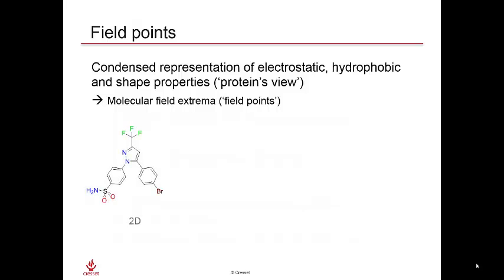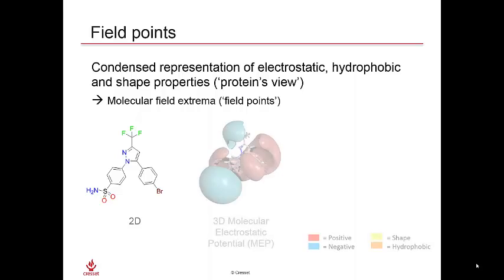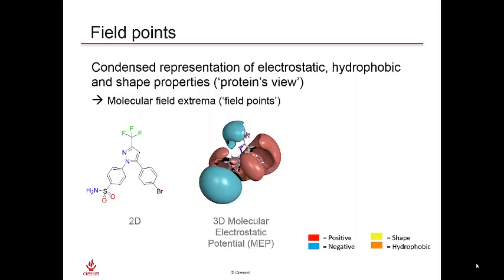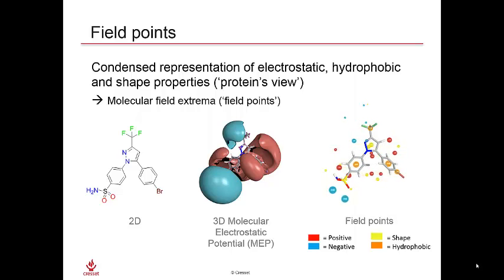Cresset's philosophy is all about looking at ligands the way they are seen or experienced by the protein receptor. To do this, we step away from the two-dimensional representation and consider a ligand as something that has three-dimensional distribution of shape, charge, and hydrophobicity. Comparing molecules using the full molecular electrostatic potential energy surfaces is computationally expensive, so we've distilled this information down into what we call field points, placed at areas of local extrema in these potential energy functions.